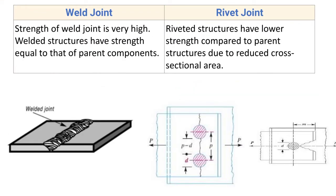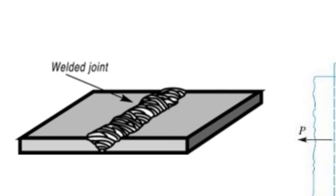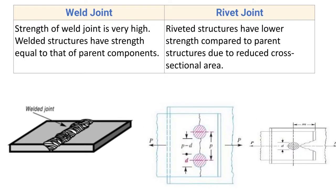Next point: the strength of weld joint is very high. Welded structures have strength equal to that of the parent component. Sometimes the strength of the weld portion is even more than the strength of the entire component.